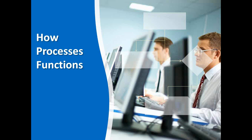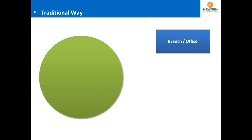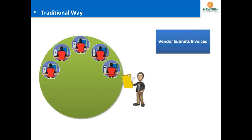Moving next to how these processes normally function — from the industry and from automations I've done and customers I've understood in this space — the traditional way has been that global giants have multiple distributed locations, branches, and offices. Each branch has operators and vendors coming in, and there is a lot of document exchange between those offices for various financial transactions.